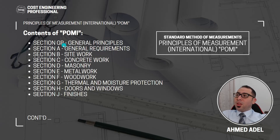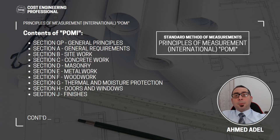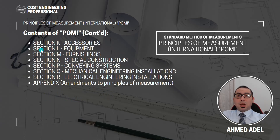If you prepare a BOQ in accordance with POMI, the contents start with Section GP — General Principles — followed by Section A: General Requirements, Section B: Site Works, Section C: Concrete Works, Section D: Masonry, Section E: Metal Works, Section F: Wood Works, Section G: Thermal and Moisture Protection, Section H: Doors and Windows, and Section J: Finishes, Section K: Accessories, Section L: Equipment, Section M: Furnishing, and Section N: Special Construction.